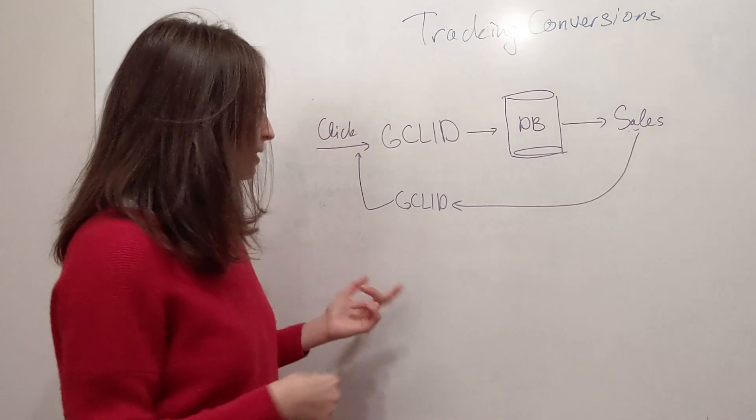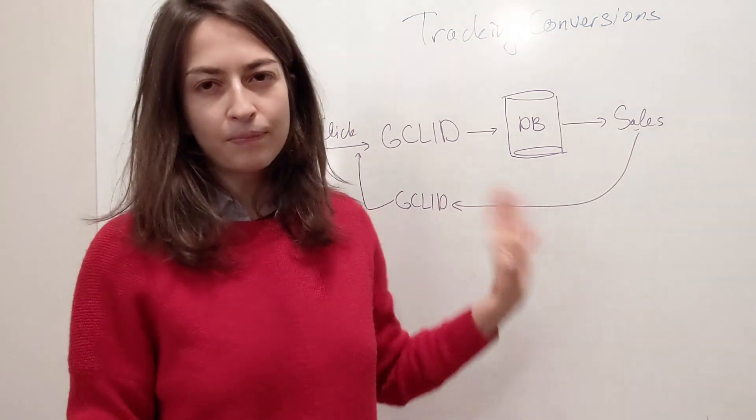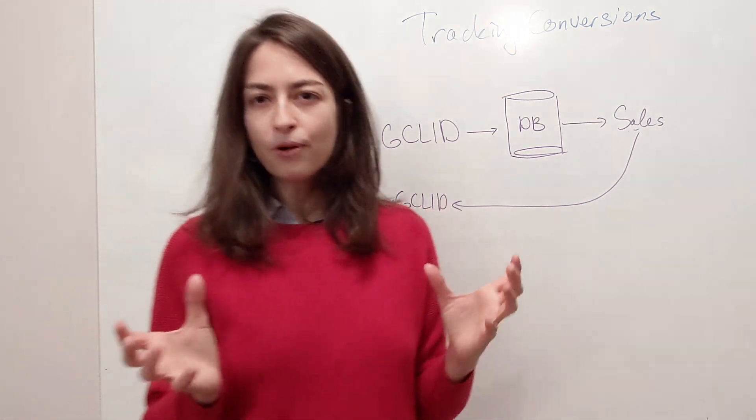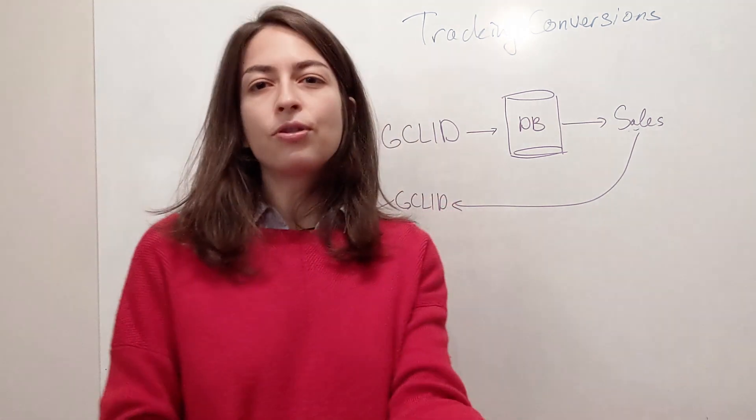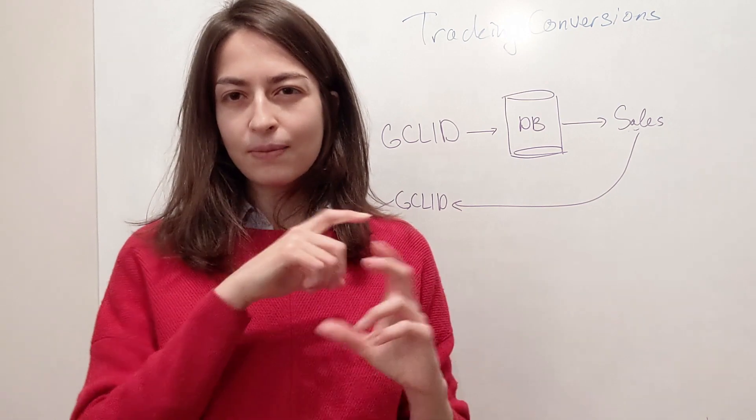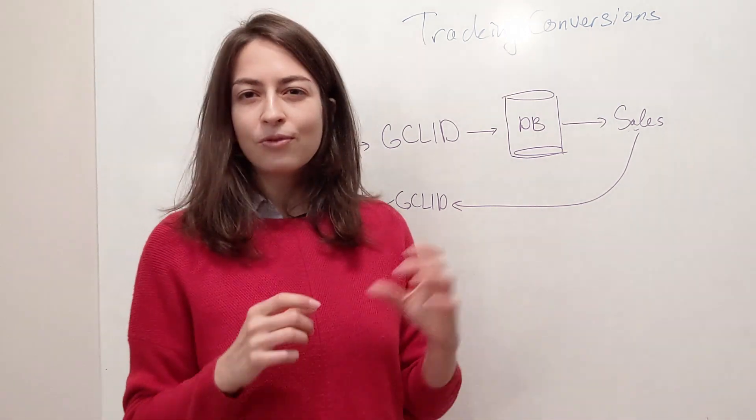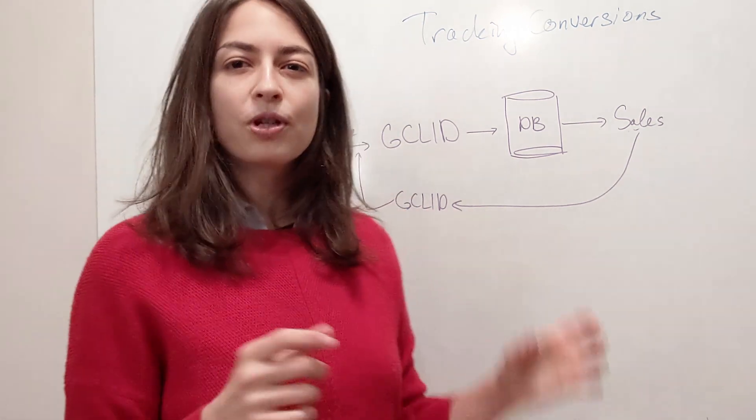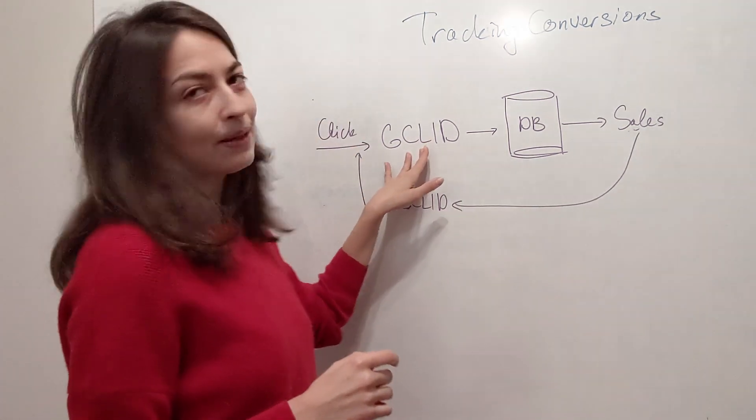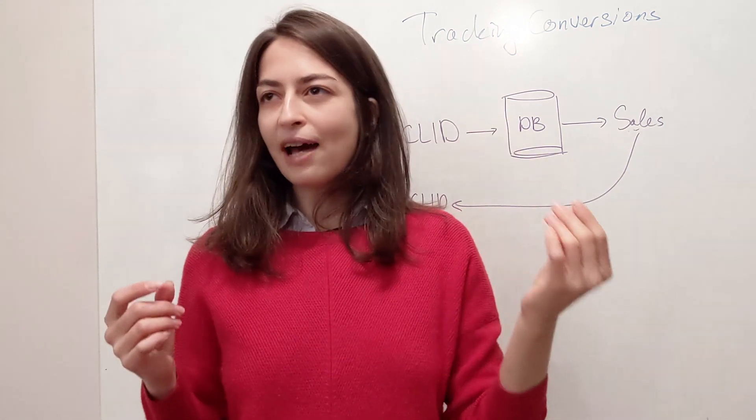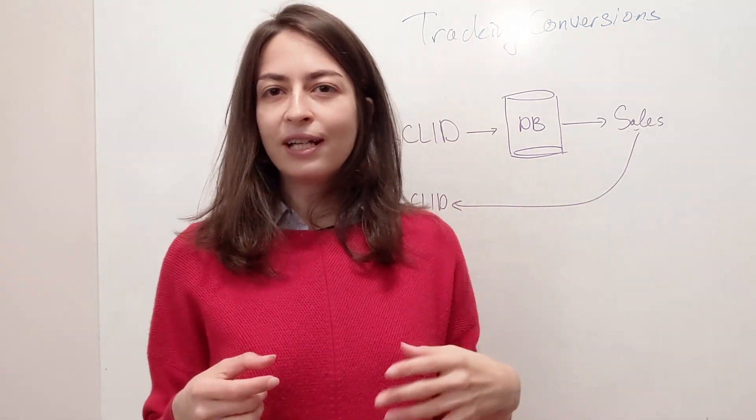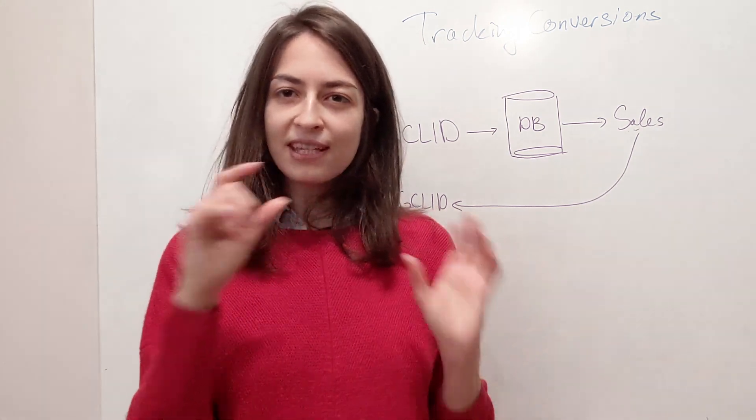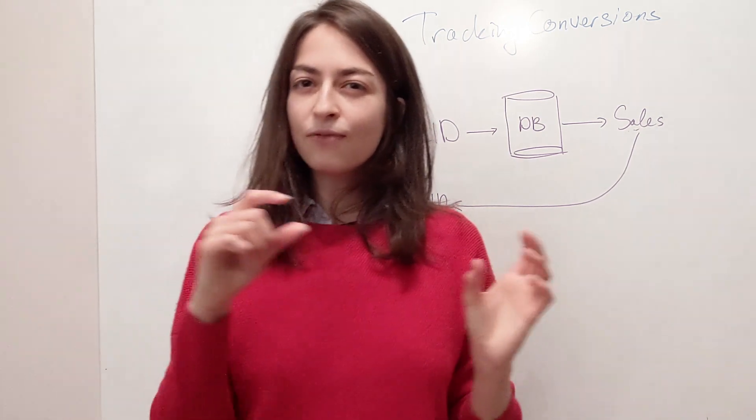So what happens then is, let's say they fill out the form on your website. In the case when you want to import offline conversions, what you have to do is install a small snippet of code, which is actually creating an invisible form field in your form, which collects this GCLID. What that means is let's say you have name, email, phone number, so the user fills this itself and then there is a hidden form field, which is the GCLID.